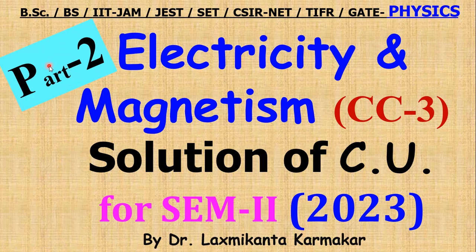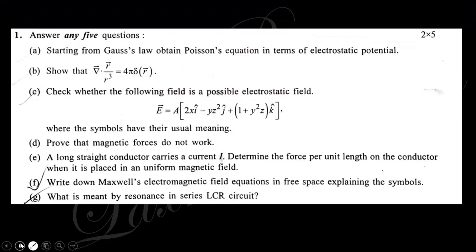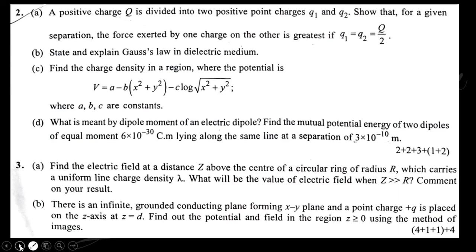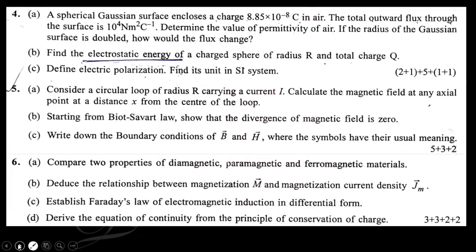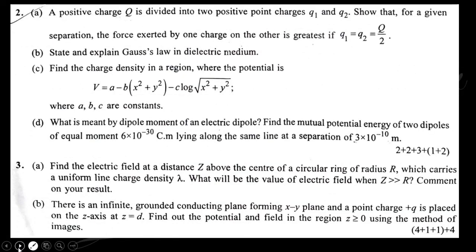Hello, welcome everyone. This is Part 2 of the solution for Electricity, Magnetism CC3 paper, year 2023, Physics Honours under University of Calcutta, Semester 2. You can see the total question paper — question numbers one through seven. In Part 1 we discussed question number one; in this part we will discuss questions two and three.